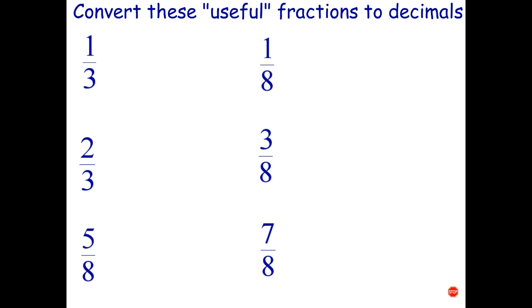In this video we're going to look at what I call some useful fractions, so they're not nice ones. In other words, I can't turn 3 easily into 10 or 100 by multiplying, and I can't easily turn 8 into 10 or 100 by multiplying. But these are fractions that we use a lot, and it's useful to be able to convert these to decimals really quickly.